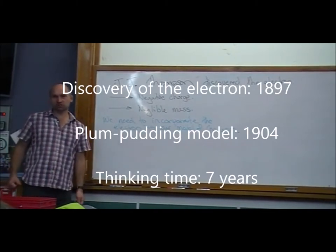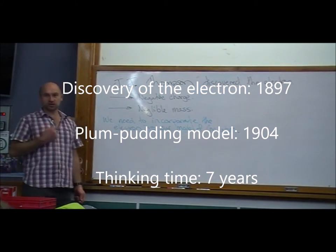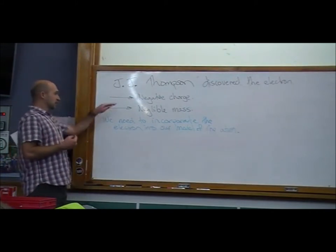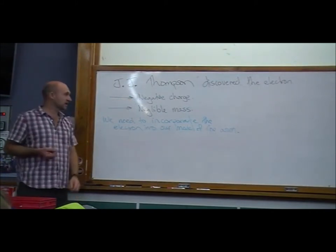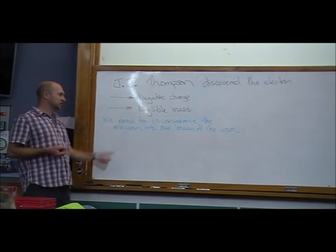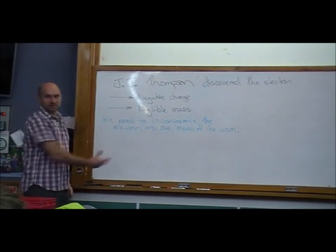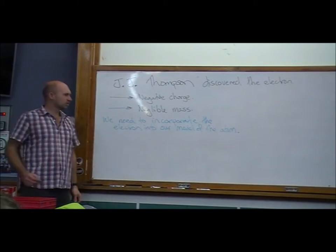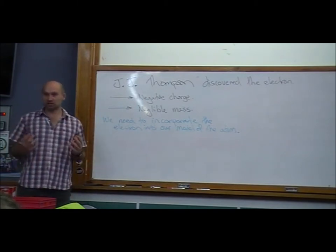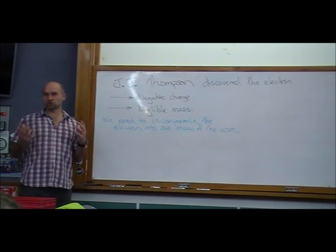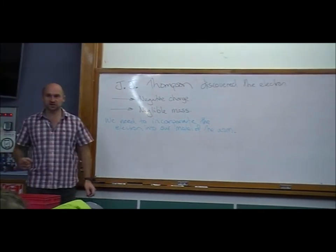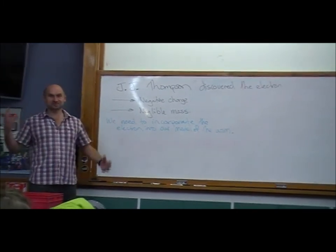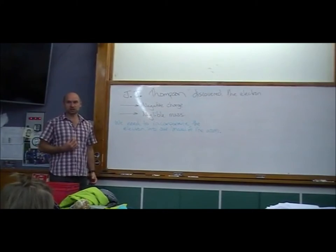which causes a problem for John Dalton's model of the atom, because we've got this electron that's got negative charge, negligible mass, and we have to somehow get that into our bowling ball model of the atom, which is tricky, because our atoms were neutral before, and so they have to stay neutral.